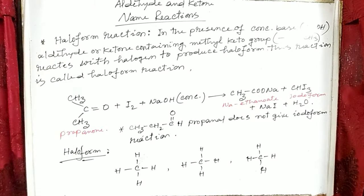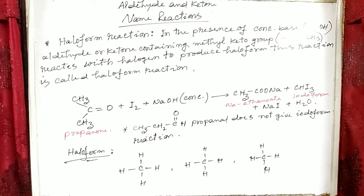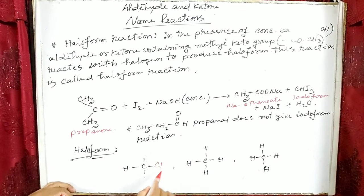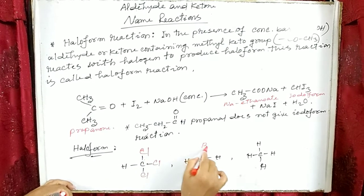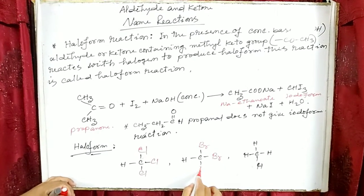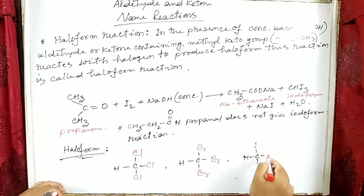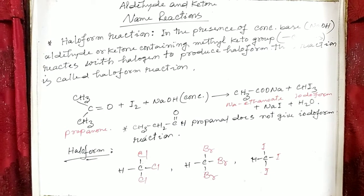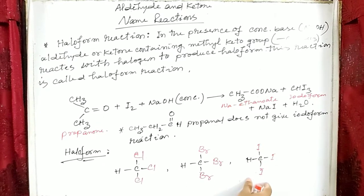Now we will study the haloform reaction. To study haloform reaction, you first need to know what haloform is. If three hydrogen atoms of methane are replaced by the same halogen atoms — like chlorine, bromine, or iodine — the obtained compounds are known as haloforms. If replaced by chlorine, the compound is chloroform; if by bromine, it is bromoform; and if by iodine, it is iodoform.